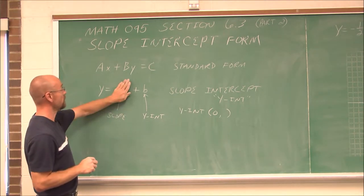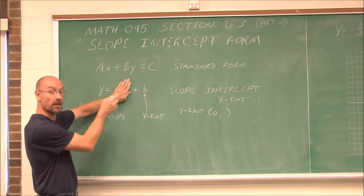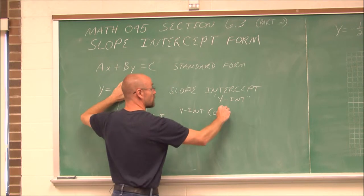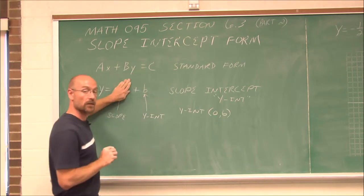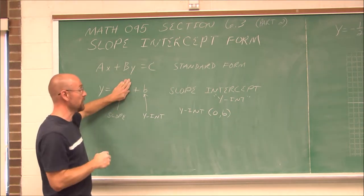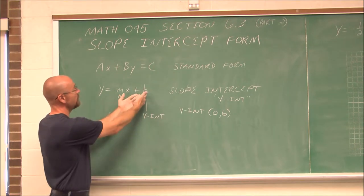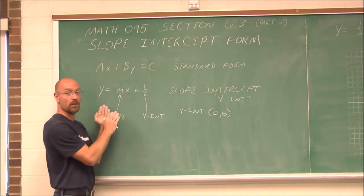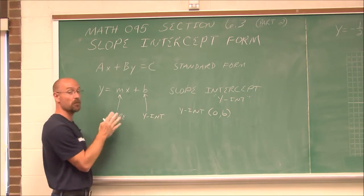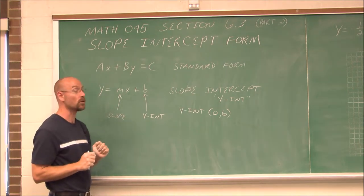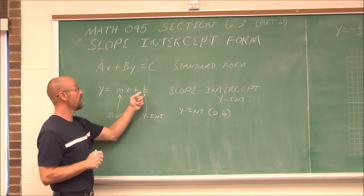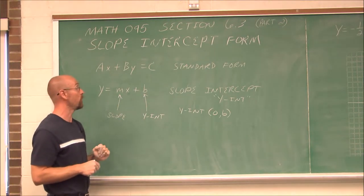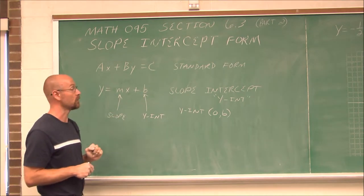Zero times anything is 0, and 0 plus anything is that value, so y equals b. When x is 0, the y-intercept is the value b — the ordered pair (0, b). We can see that value directly in this equation. So by putting an equation in this form, we immediately know the slope and at least one point: the y-intercept.